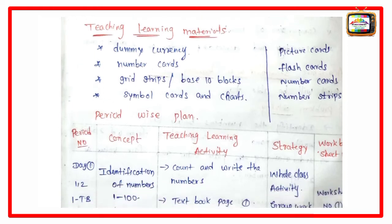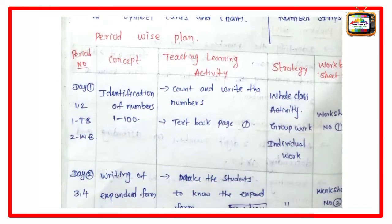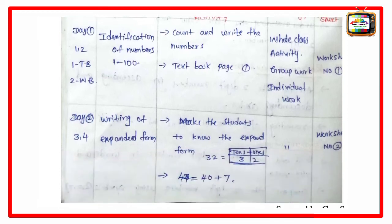Next, period-wise plan. First period Day 1, first period, second period. First period belongs to textbook, second period is completely workbook. Concept: identification of numbers 1 to 100. Teaching learning activity: count and write the numbers. Textbook page number 1. Strategy: whole class activity, group work, individual work. Worksheet number 1.